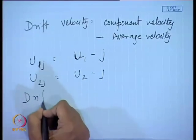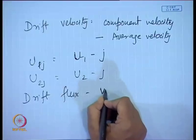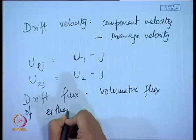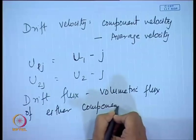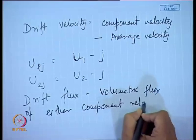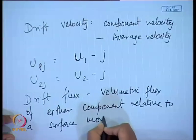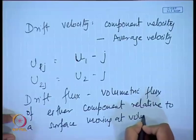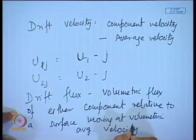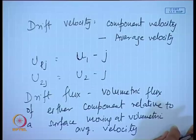Next comes the drift flux. The definition of drift flux — which you will find in Wallis or Collier — is: the volumetric flux of either component relative to a surface moving at the volumetric average velocity.